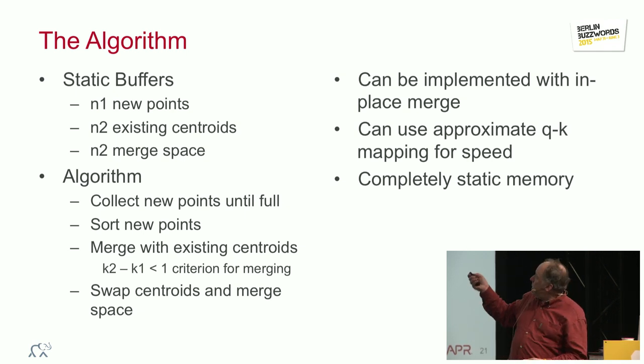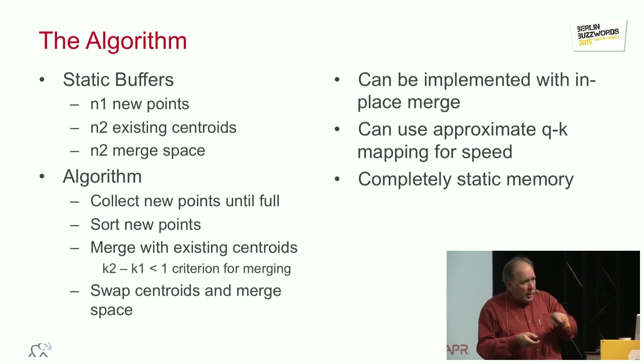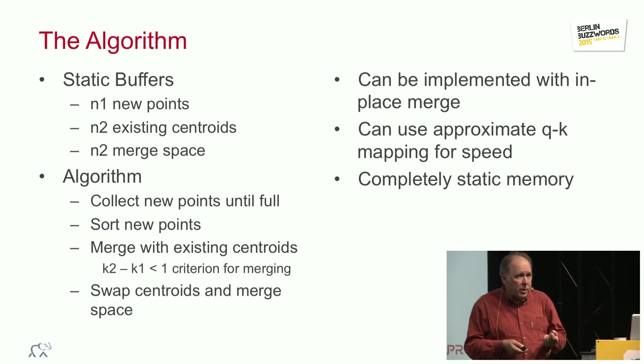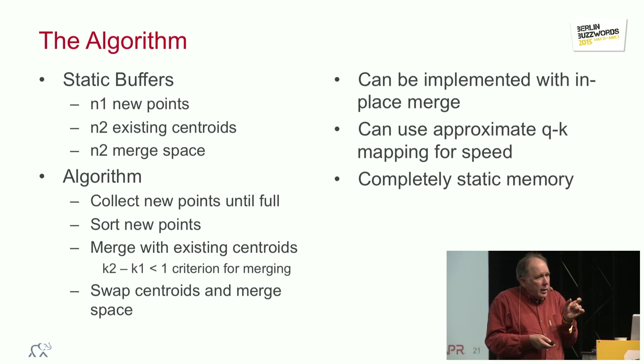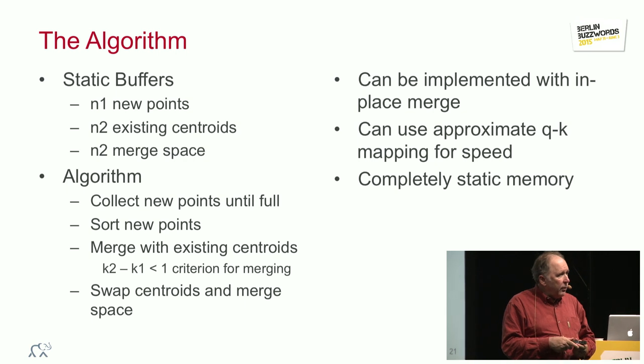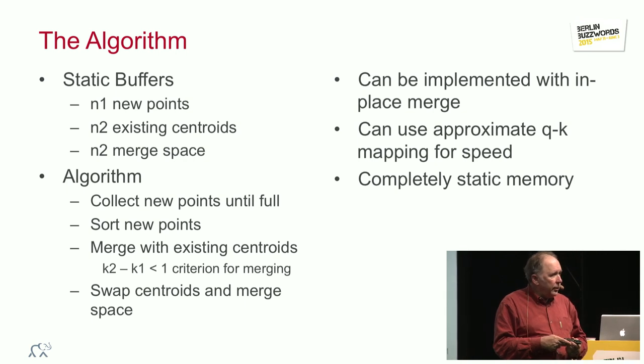We can improve it a little bit by using an in-place merge that gets rid of half of the space almost. We can use an approximation for that curve, the compression curve. That will improve the speed because we don't have a trigonometric function. And we can get the cost per point down around, or possibly below, 100 nanoseconds per point, because we have no allocations. All of the code is straight line, very simple sort of code.